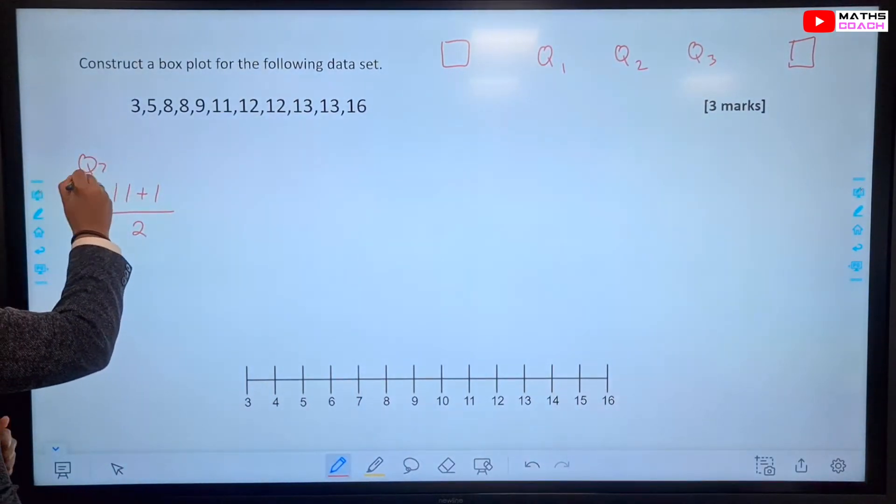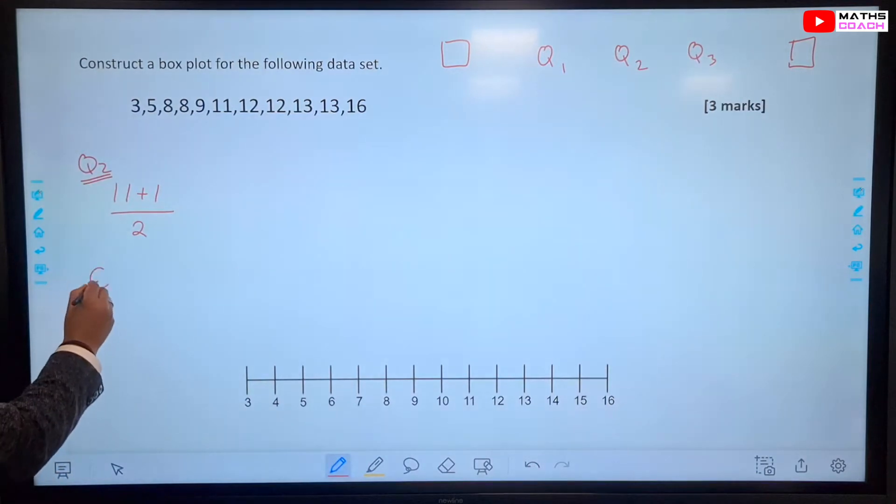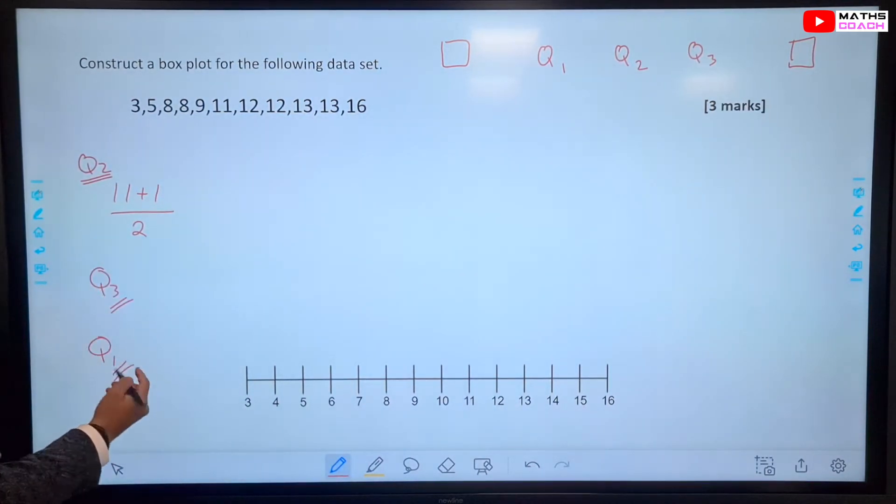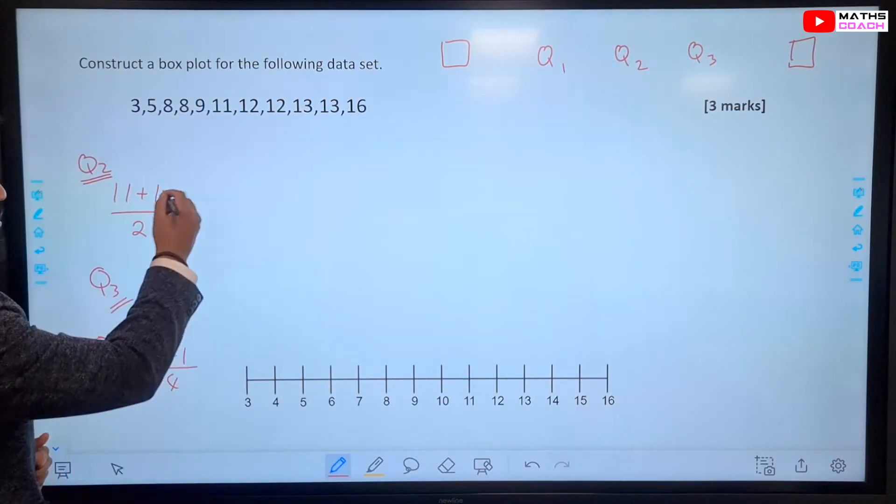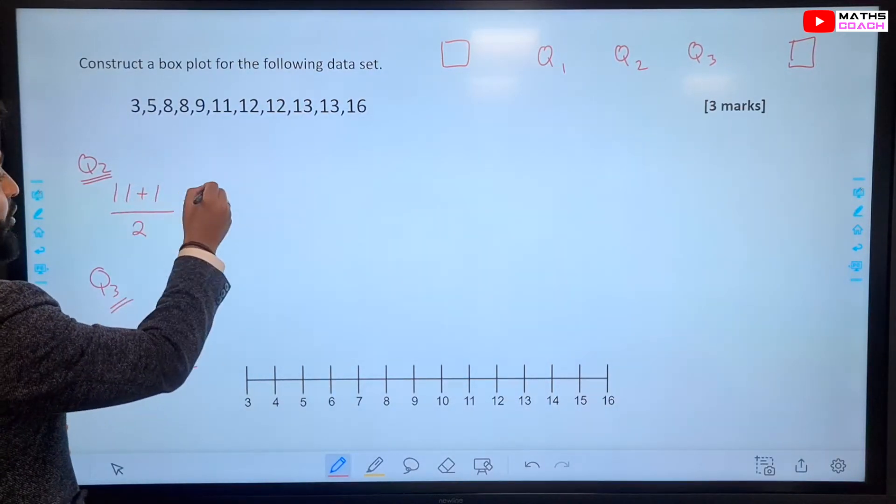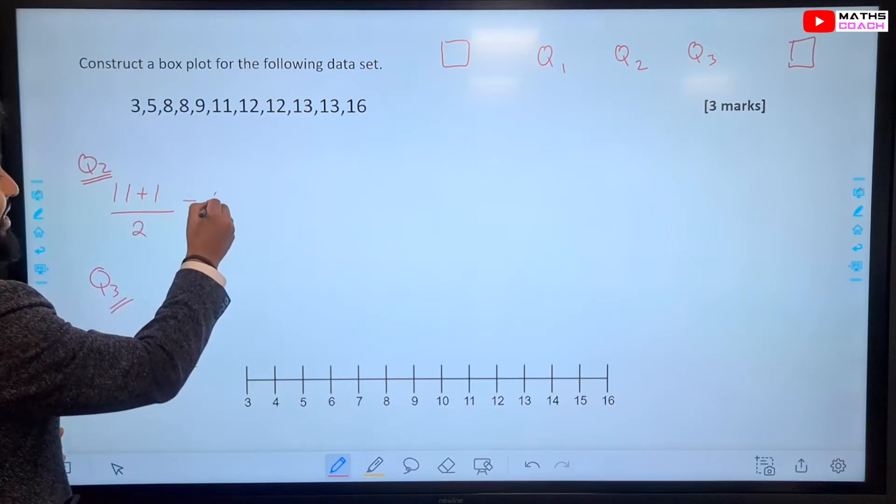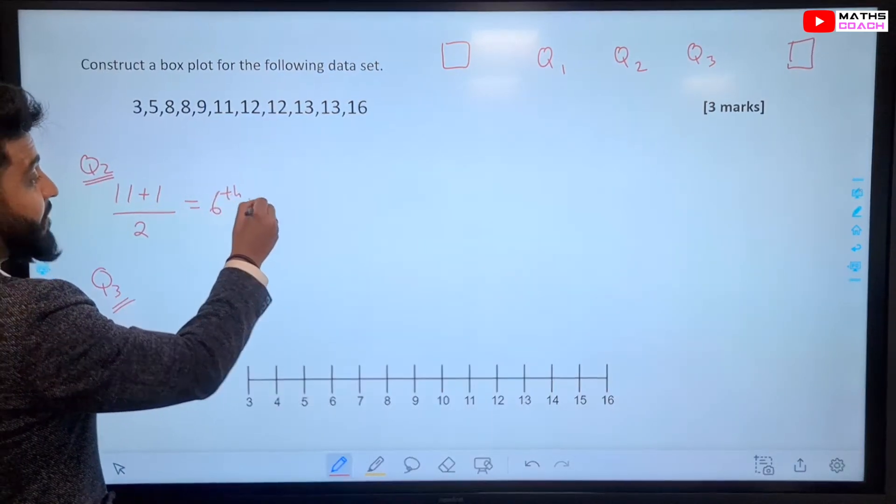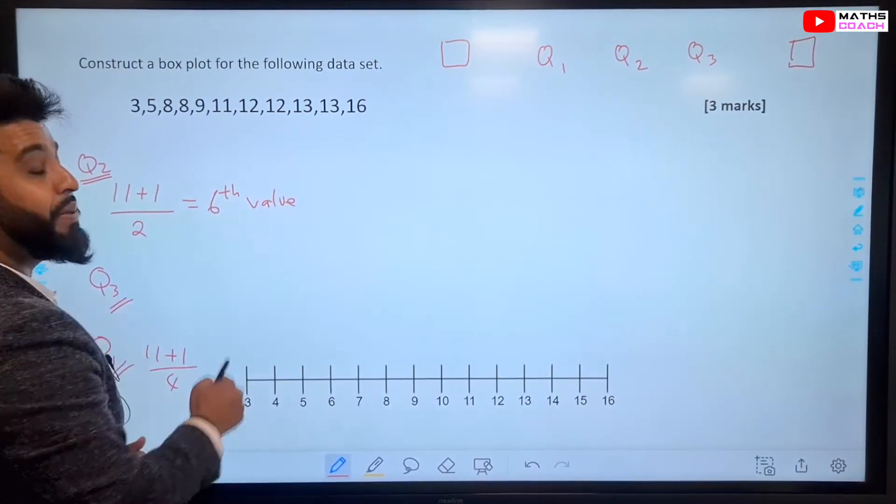So, this is for our Q2, our median. To find our Q3 and our Q1, let's start with Q1. It's easier. We'll do 11 plus 1 divided by 4. And for Q3, we can just take the value of this and then times it by 3.